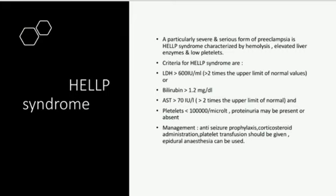HELLP syndrome is an acronym: H for hemolysis, EL for elevated liver enzymes, and LP for low platelet count. It is a rare complication of PIH or pregnancy-induced hypertension in 10–15% of cases. It may be associated even with mild hypertension and proteinuria. This syndrome is manifested by nausea, vomiting, epigastric or right upper quadrant pain along with biochemical and hematological changes.